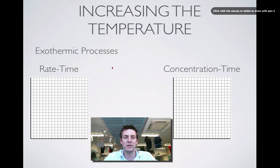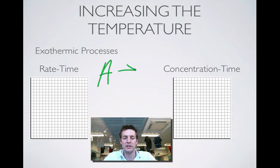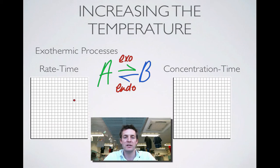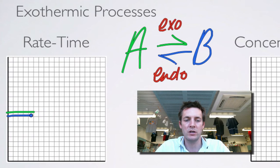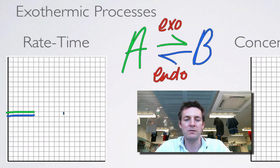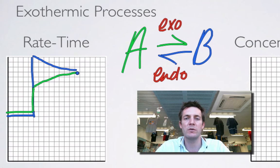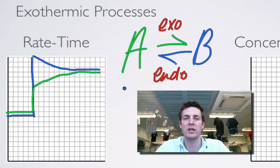We're now looking at an exothermic process — A turning into B, and B turning back into A. The forward reaction is exothermic and the reverse reaction is endothermic. If we increase the temperature, these two reactions, which are going at the same rate as one another, will both speed up, because a greater proportion of particles have enough energy to react. But the system is trying to lower the temperature, so the endothermic reaction will be favoured and will speed up by more than the exothermic reaction. Then they'll come back together in the usual way, back at equilibrium when they're equal again, and they'd carry on at that level until some other change disrupted the equilibrium system.